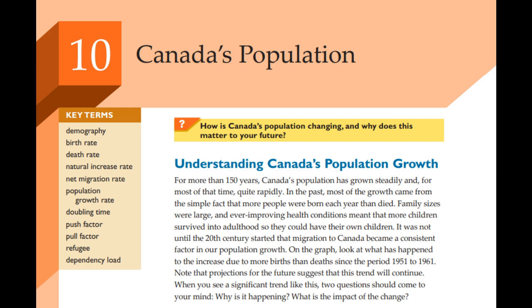If we go back in time, family sizes in Canada used to be much bigger. The chapter mentions that back in the 1850s, the birth rate was more than double what it is today. A lot of things played a role in changing that — major events like world wars and economic ups and downs. When the economy is uncertain, people tend to put off having kids or have fewer children.